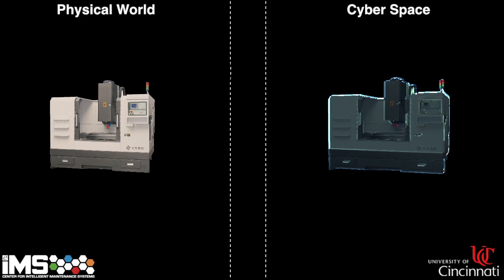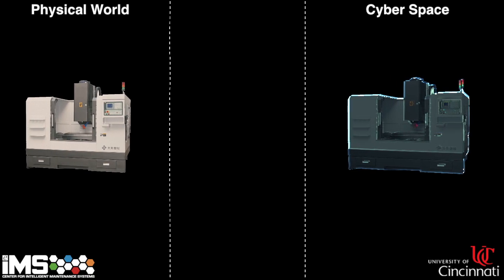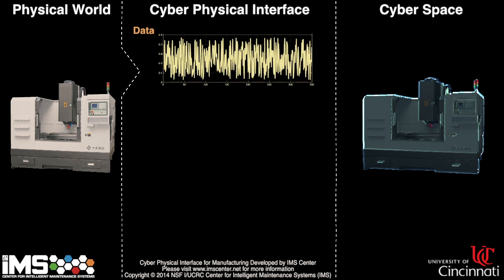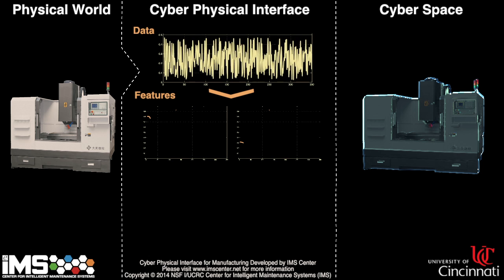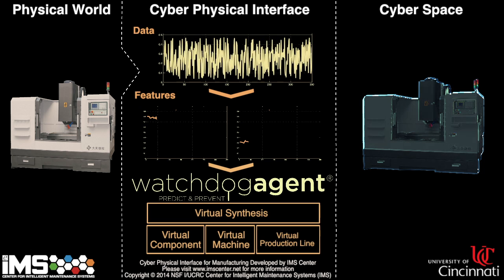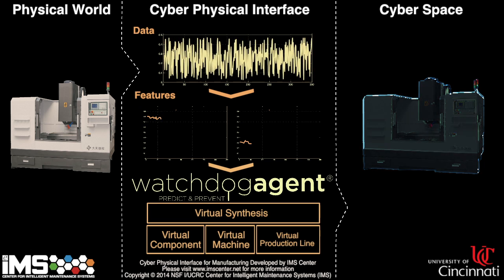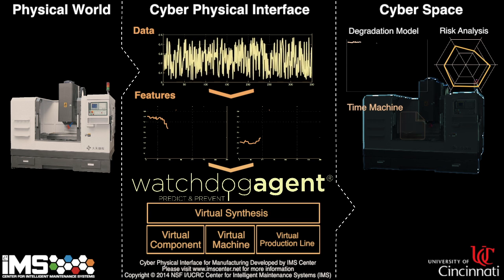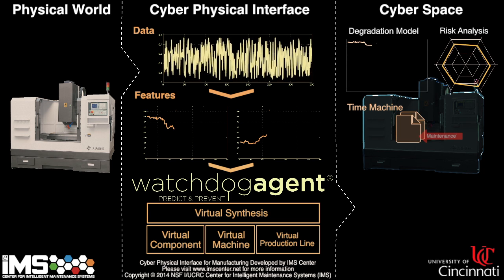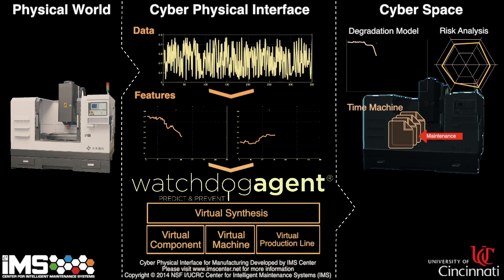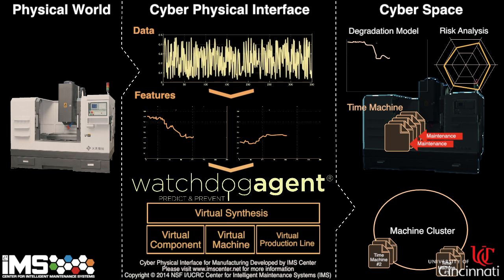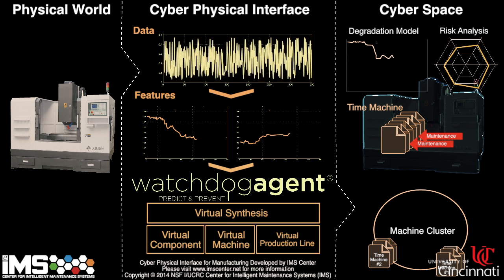IMS Center has developed a cyber-physical interface module to connect machines. When sensor data are connected, the system is able to extract features from different operating regimes — for example, spindle speed may be high or low. An aging algorithm can then convert that into health information.